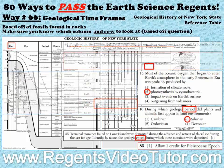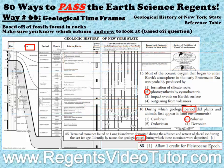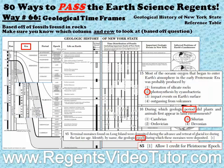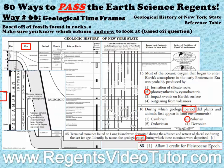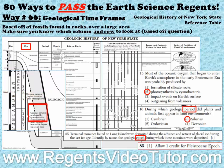For the second Eon question, most of the oceanic oxygen that began to enter Earth's atmosphere in the early Proterozoic era was probably produced by photosynthesis by cyanobacteria.